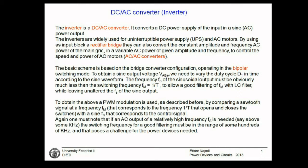Typical applications include, for example, an uninterruptible power supply. In this case, you can have a battery. The uninterruptible power supply is used to provide power in case the external supply is missing. You have a battery and you need to generate the sinusoidal output from the battery for as long as the battery lasts. AC motors also need this sinusoidal input.